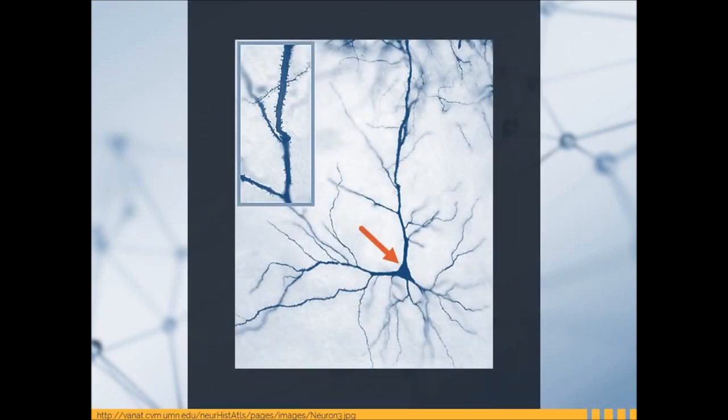This highly magnified image shows an individual neuron, and the red arrow is pointing to the cell body of the neuron. Neurons range in size — the smallest ones have a cell body that is four microns in diameter. A micron is one one-thousandth of a millimeter. The largest is approximately 100 microns in diameter, which is the same as the thickness of a piece of paper you would put in a printer. So imagine how tiny even the largest neuron is.